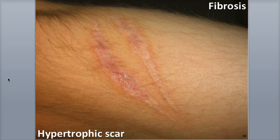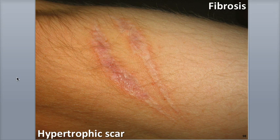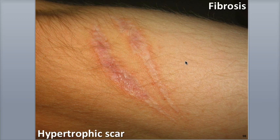Fibrosis is the generation of scar tissue during deep wound healing. Scar tissue has more densely packed collagen fibers with reduced elasticity, reduced numbers of blood vessels — which gives scar tissue a lighter color — and, depending upon the extent of the damage, fewer glands, sensory structures, or hair follicles.